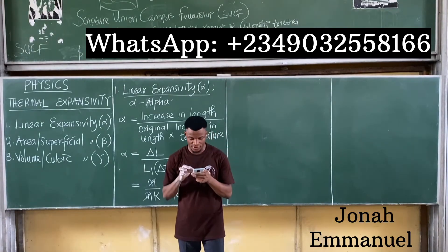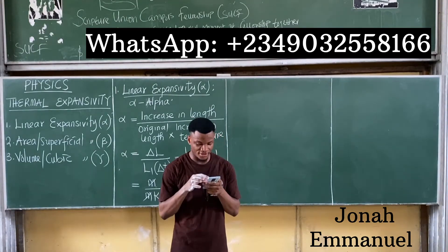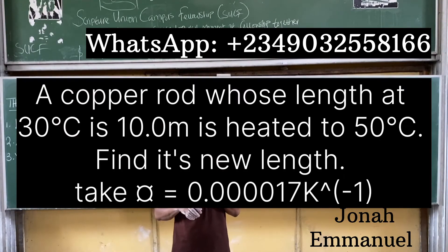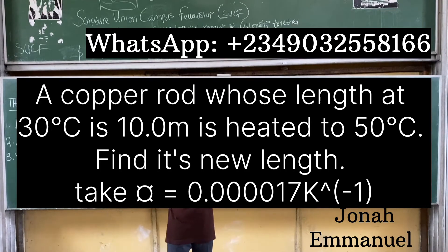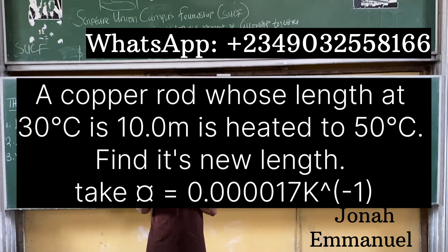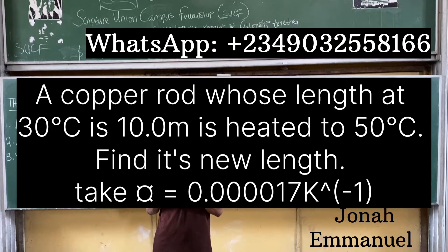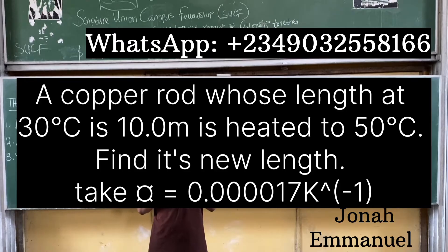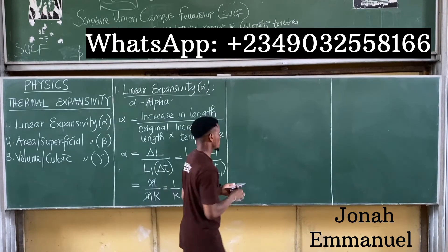First question on linear expansivity: a copper rod whose length at 30 degrees Celsius is 10.0 meters is heated to 50 degrees Celsius. Find its new length. Take alpha, the linear expansivity for copper, as 0.000017 per Kelvin.